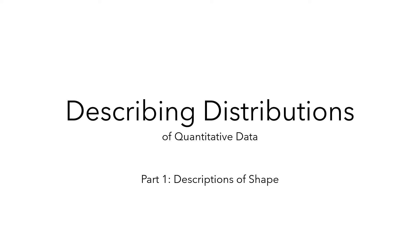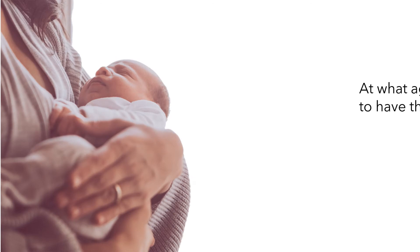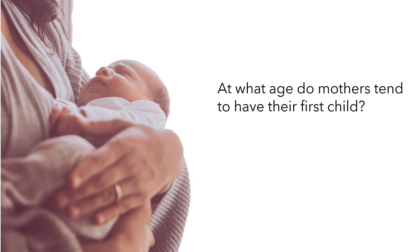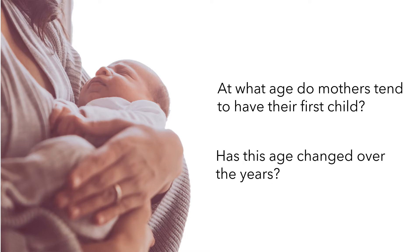In this video, we'll start exploring ways to describe distributions of quantitative data. Let's start by thinking about two related research questions: first, at what age do mothers have their first child? And second, has this age changed over the years?